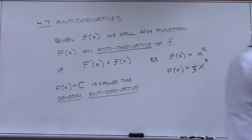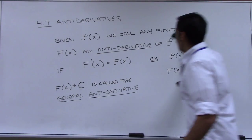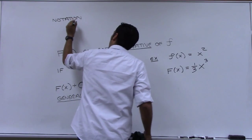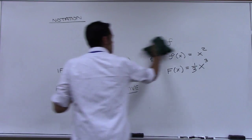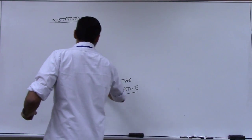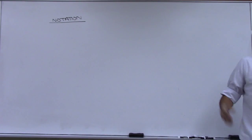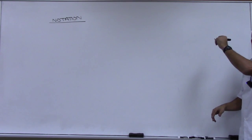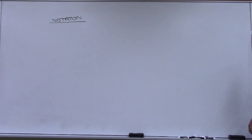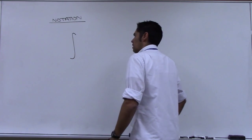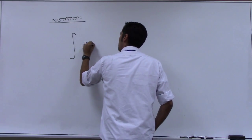Now let's get some notation — that just means how we write things using symbols. If I'm going to ask you to find the anti-derivative of a function, I could just write out 'find the anti-derivative of the function,' but that becomes a pain to write each time. So we have a shorter way of writing all that out using this symbol.